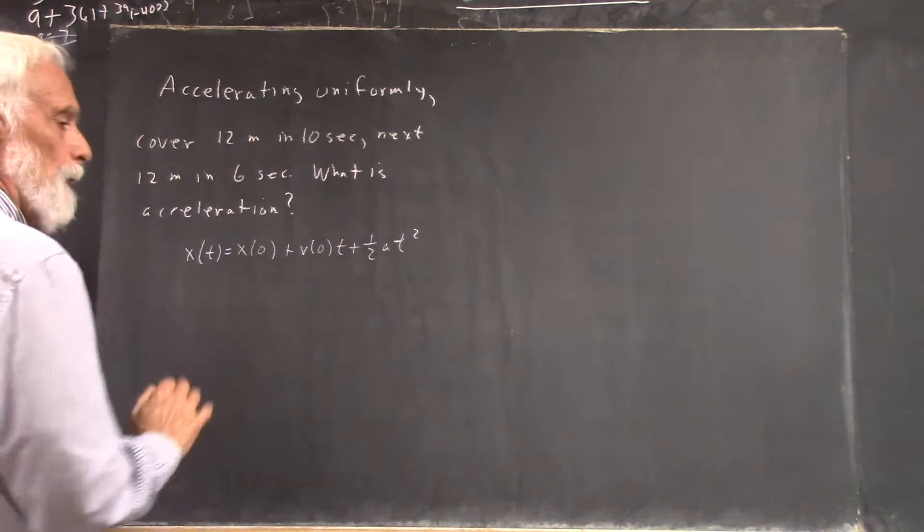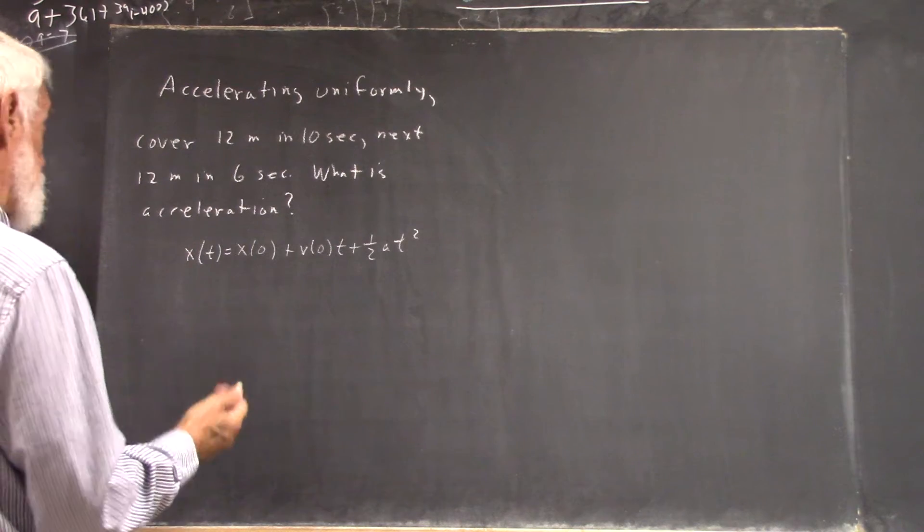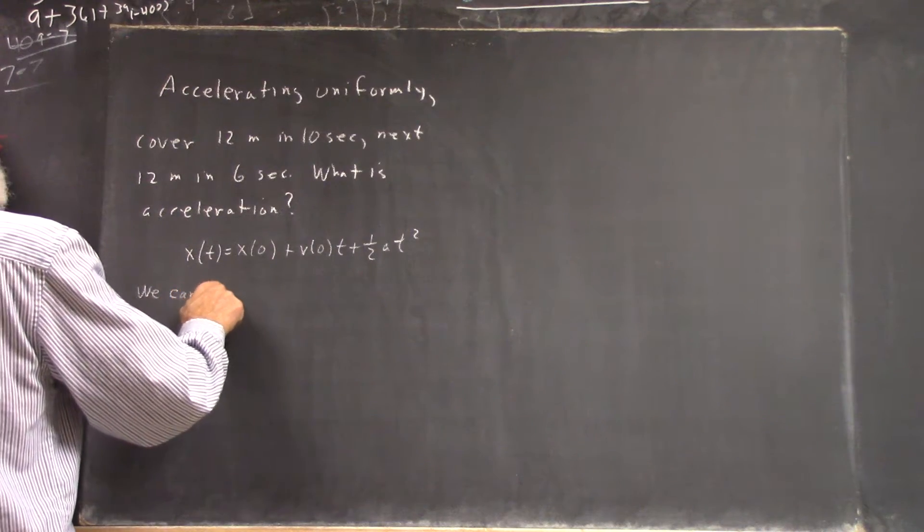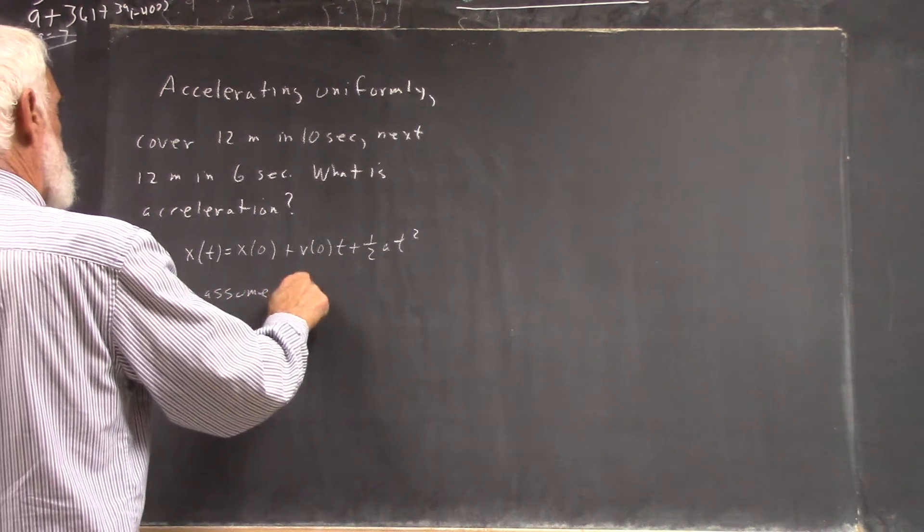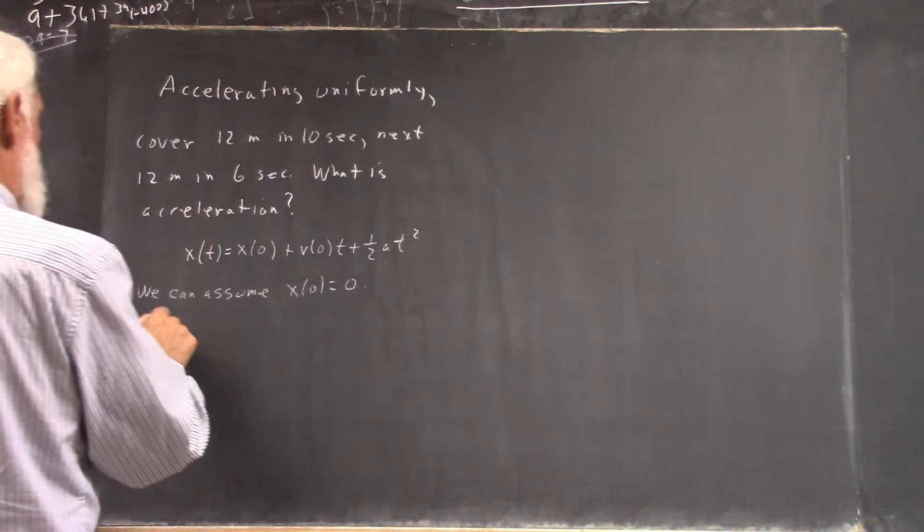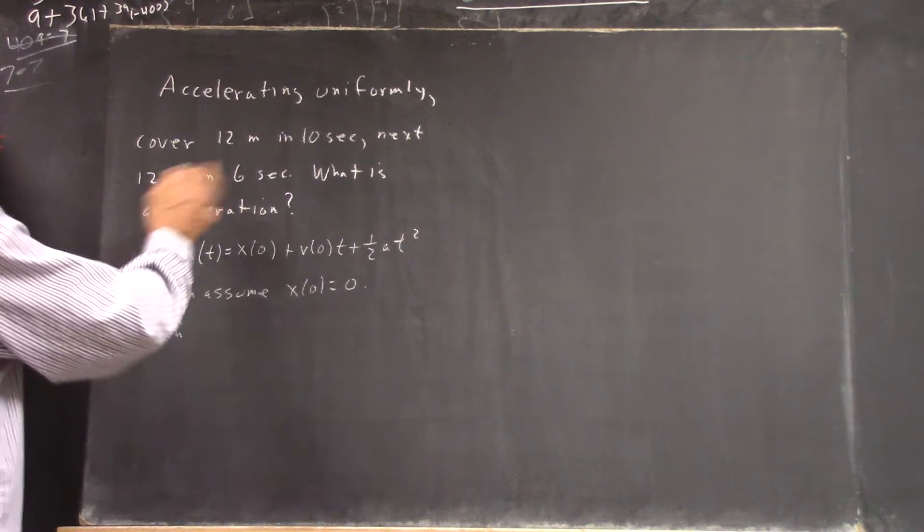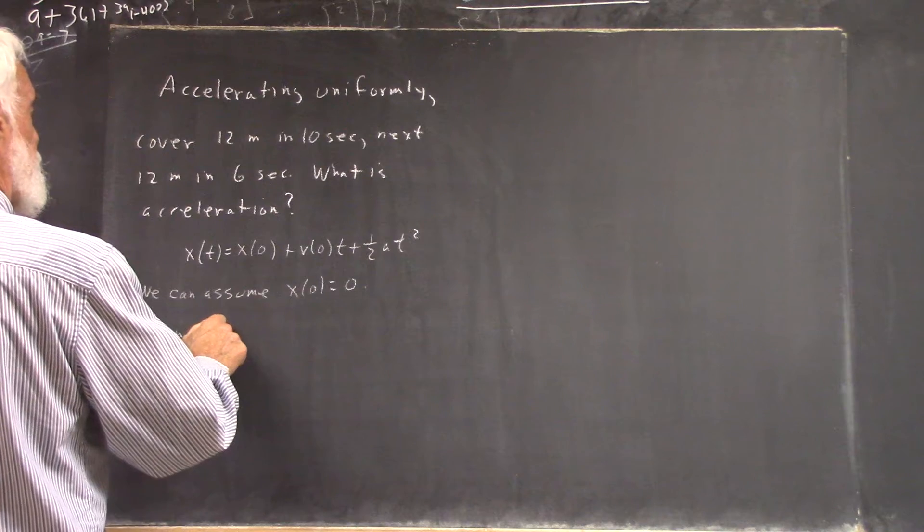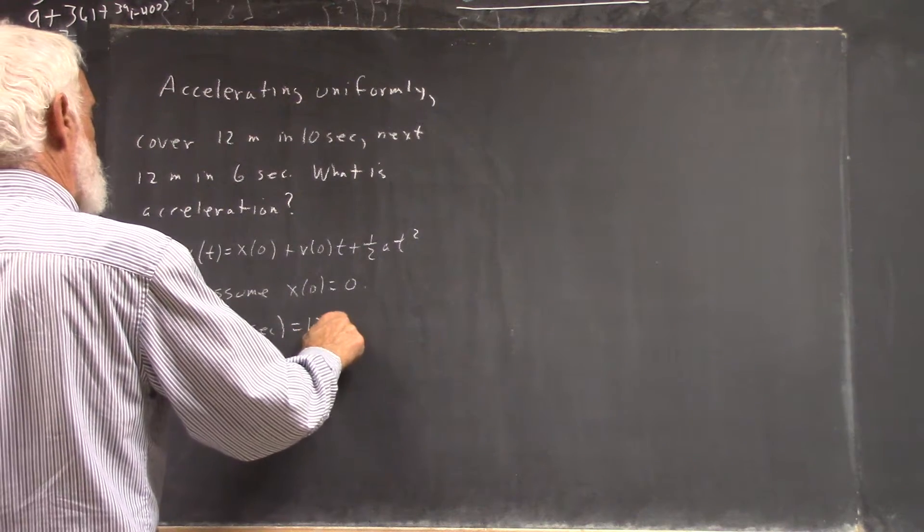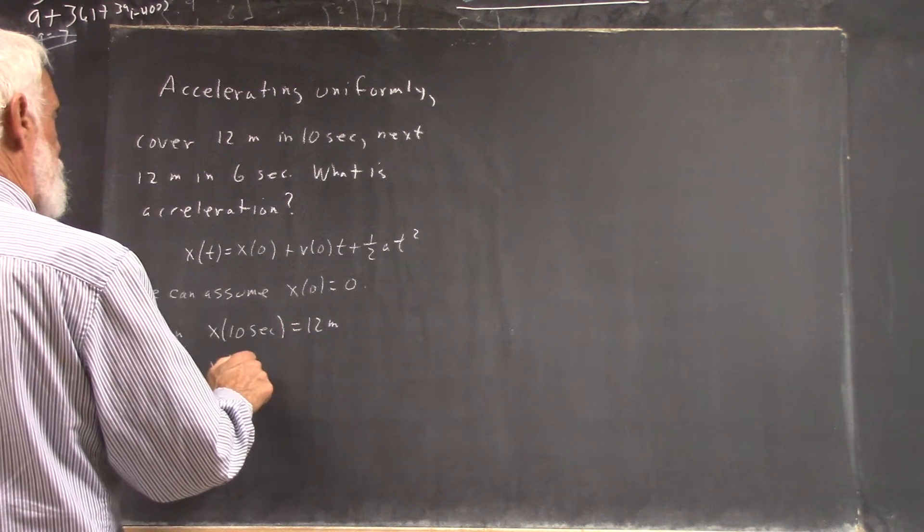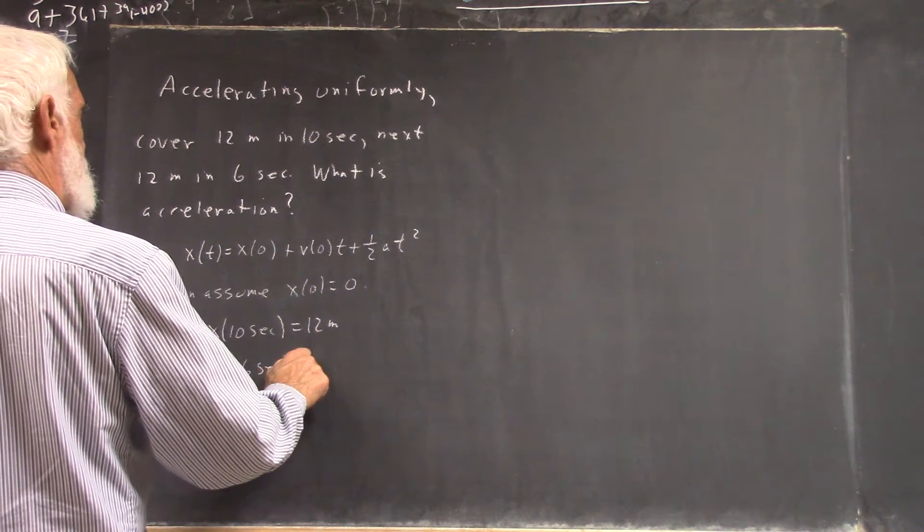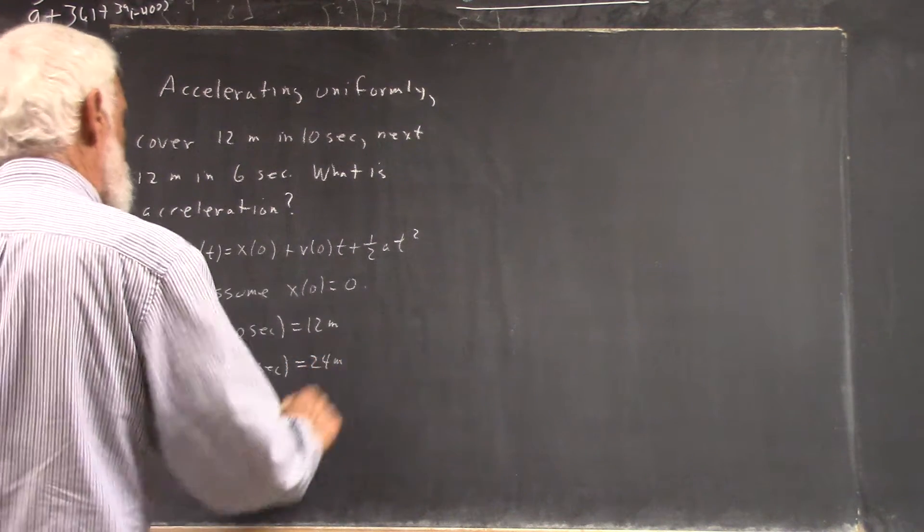We can set any coordinate system we want to on this situation. So we could say, we can make the simplest assumption that x(0) equals 0. And what do we know? Our information tells us that x(10 seconds) equals 12 meters and x(16 seconds) equals 24 meters.